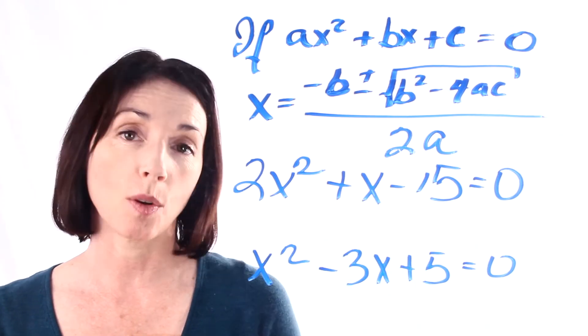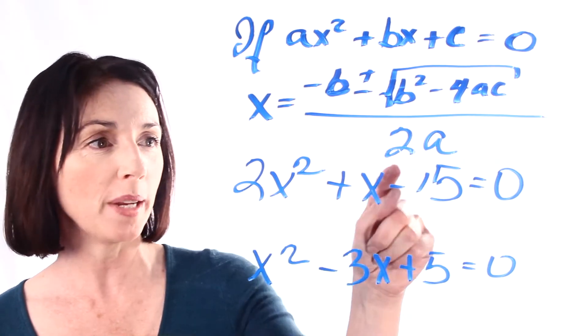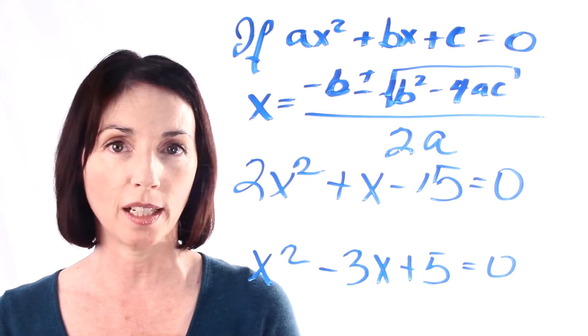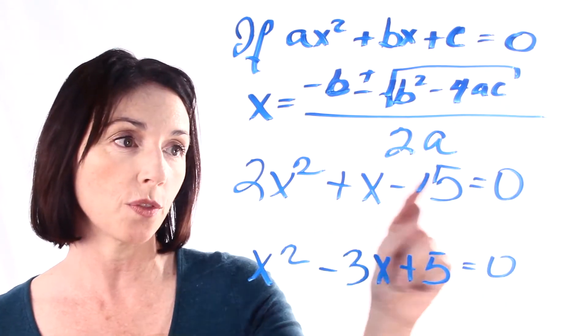Now, the first thing we need is a quadratic equation in the right form, and we have two of them here. So we're going to identify a, b, and c for each of these quadratic equations. So let's look at this first one here.